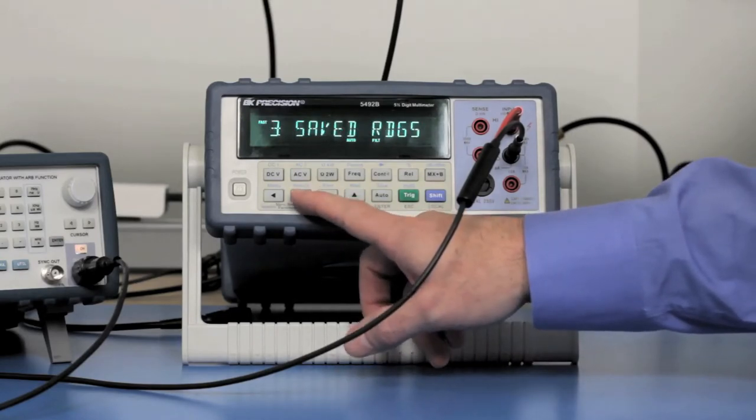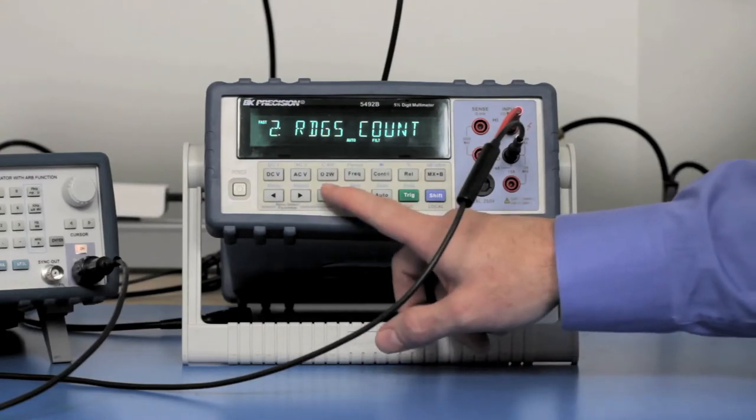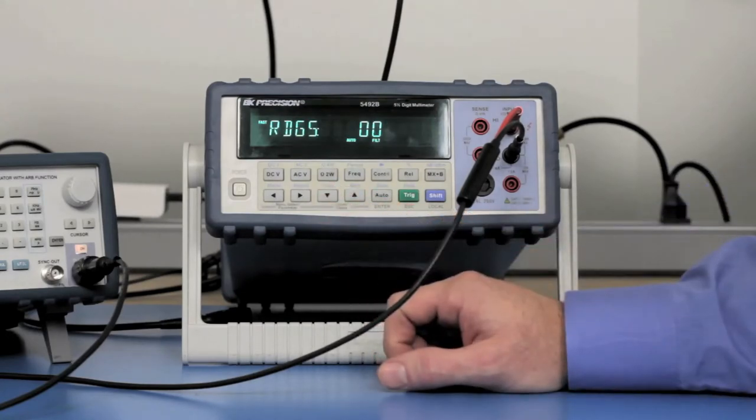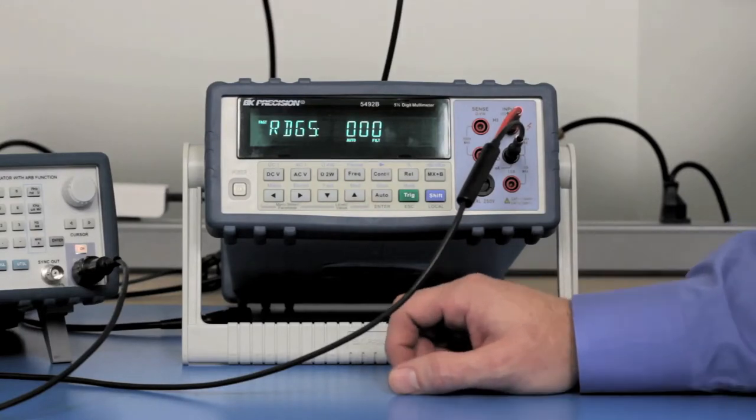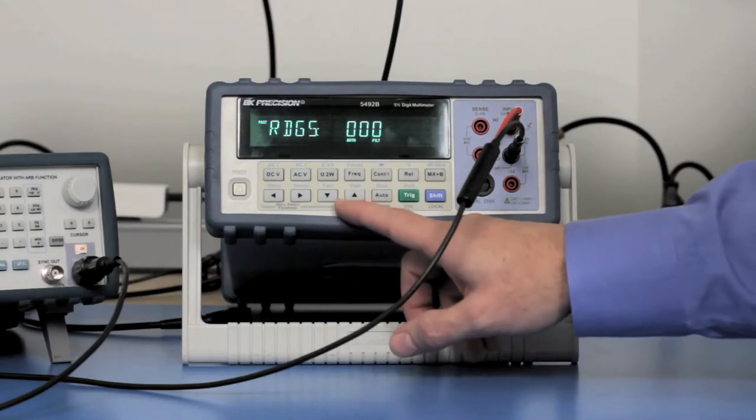Next, we need to set the readings count. This is how many readings you want to record, and the 5492B can record up to 512 readings, so I'm going to set it for 512.